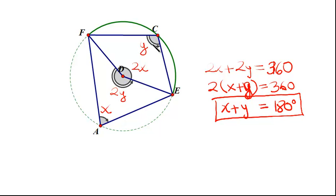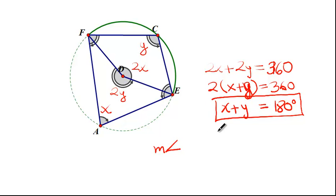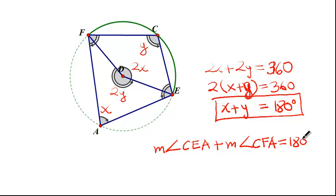What we have shown here is that the opposite angles in the cyclic quadrilateral add up to exactly a straight angle — 180 degrees. By the very same argument, we could also show that angle CEA plus the measure of angle CFA — the angle opposite to it in the cyclic quadrilateral — is also equal to 180 degrees. In other words, opposite angles in a cyclic quadrilateral add to 180 degrees.